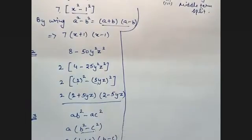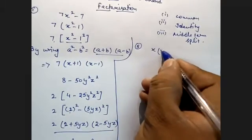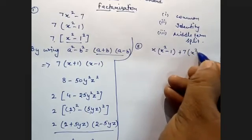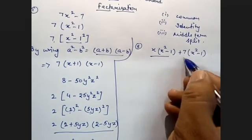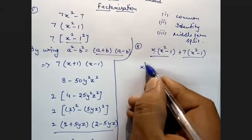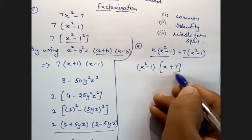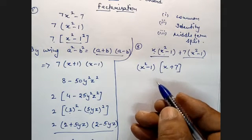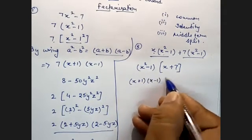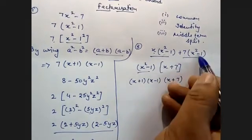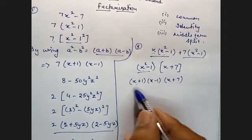Fifth sum: X into X squared minus 1, plus 7 into X squared minus 1. Here, X squared minus 1 is common. What is left? X plus 7. So we get X squared minus 1 into X plus 7. Now X squared minus 1 is A squared minus B squared — 1 can be written as 1 squared — giving X plus 1 into X minus 1, multiplied by X plus 7. This is the answer.